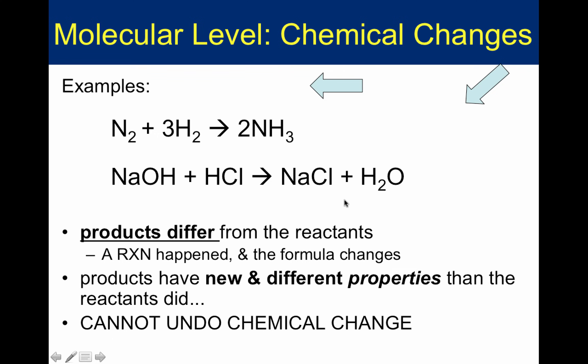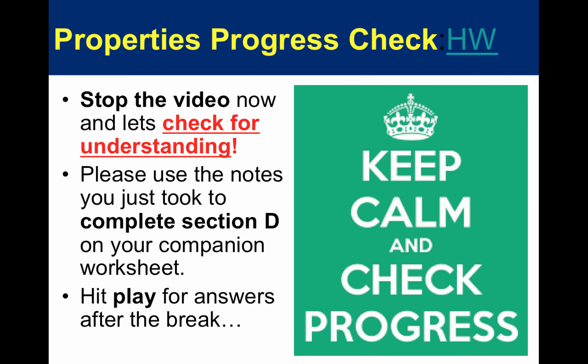Even though we saw that some physical changes can be undone, once you have a chemical change it cannot be undone by physical means like boiling. You need a chemical reaction to undo a chemical change. So let's stop the video now and check for understanding — use your notes to complete section D on your companion worksheet, then hit play again for the answers.